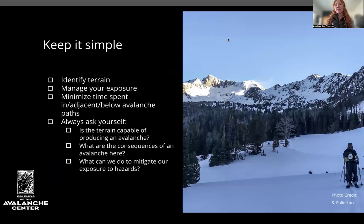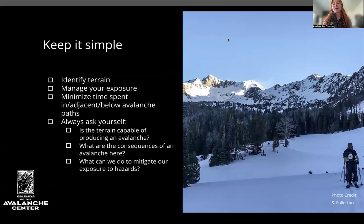Through this, you should be able to clearly identify avalanche terrain even in complex situations where it's not just one path. Manage your exposure in that path or paths, and minimize time spent adjacent to or below avalanche paths. Constantly ask yourself: Is this terrain capable of producing an avalanche? What are the consequences if one occurs here, large or small? What can we do to mitigate our exposure — picking shallower slope angles, avoiding overhead hazards, or changing our plans throughout the day? It's a constant cycle of situational awareness, with a simple goal of managing avalanche terrain exposure.